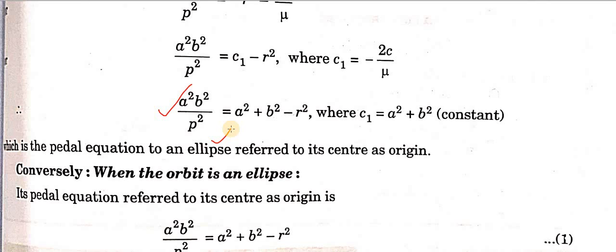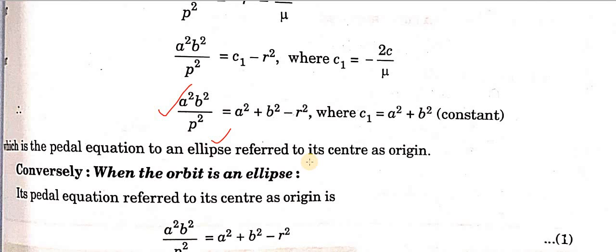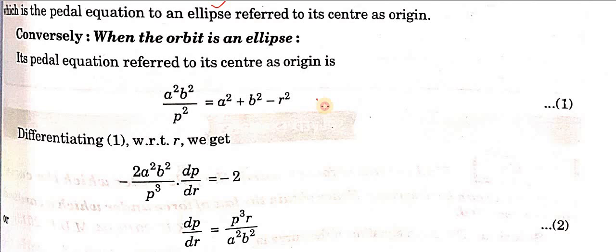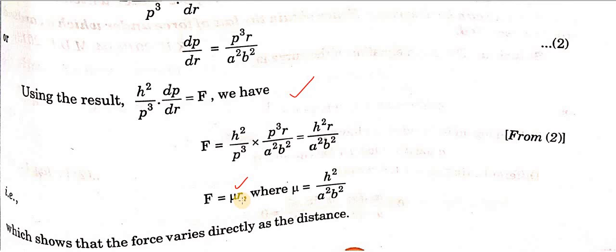This is the topic of elliptical orbit. In the first video we used it in polar form, and here we use it in pedal form. So if force is given by F = μr — directly proportional to the distance — we prove the orbit is an ellipse. Checking the reverse: if the orbit is an ellipse, we look at the ellipse equation in pedal form, derive dp/dr, use the central orbit pedal equation, and confirm F equals μr, a force that varies directly as the distance.